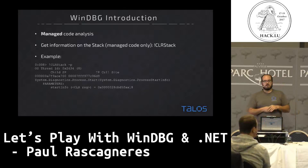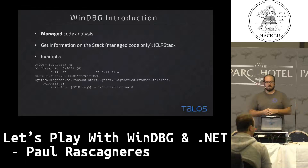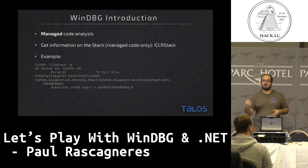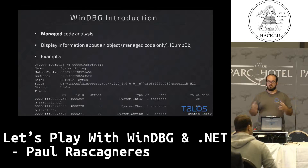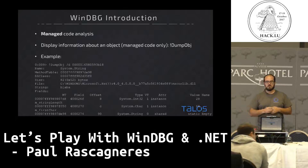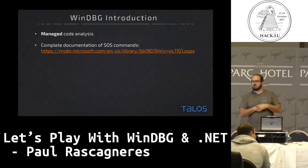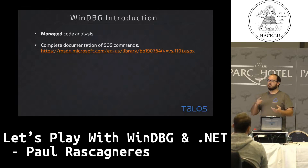If you are used to debugging C or C++ applications, you often play with the stack to get arguments. You can do the same kind of thing on .NET applications using CLR stack with the -P flag, and you will have the .NET stack. I typically use it to get arguments. You can dump a .NET object and get every attribute of an object. If the first attribute is filename and is a string, you can get it directly from WinDBG. The SOS documentation is complete. I will use about three functions of the extension, but there is a lot more — you can even monitor memory leaks on .NET applications. It's really powerful, not only for malware reversers, but for developers as well.